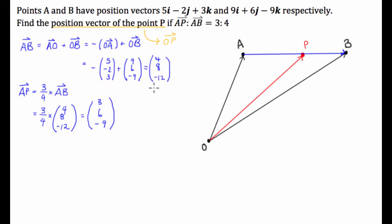Now, let's have a look at all the vectors that we have. We have OA, we have OB, we have AB, but we also now have AP.